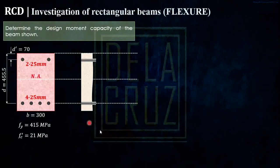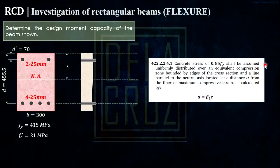So let's assume the neutral axis is here. And that is at a distance C from the compression of concrete, extreme compression. So let me show you this code. From my previous video, sinabi dito sa code that the concrete stress of 0.85 FC prime shall be assumed uniformly distributed over an equivalent compression zone bounded by the edges of the cross section and a line parallel to the neutral axis.